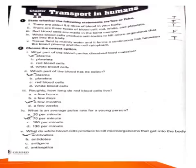Today we will start Chapter number 11, Transport in Humans. Number 1, state whether the following statements are true or false. There are about 5.5 liters of blood in your body - true. There are 3 types of blood cells: red, white and platelets - true. Red blood cells are made in bone marrow - true. White blood cells produce antitoxins to kill microorganisms - false, because antitoxins eliminate toxins. Tissue fluid is mainly water and it forms a continuous link between the blood plasma and the cell cytoplasm - true.